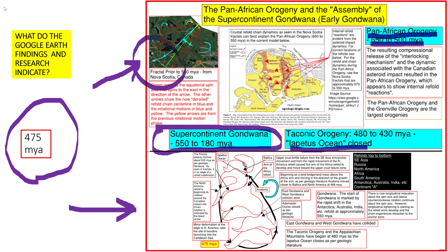Looking at the diagram, the refolds from top to bottom of the chain are: Southeast Asia at the top, Russia, North America, Africa, South America, Antarctica, Australia, India combined refold, and Continent A. As the supercontinent of Gondwana forms, starting 550 million years ago and existing to 180 million years ago, its start is marked by a rapid shift in the Antarctica-Australia-India combined refold at approximately 550 million years ago. There is now longitudinal relaxation about the spin axis, and lateral counterclockwise rotation continues, though longitudinal tightening is starting again as refold arms develop and the chain experiences attraction to the anchor zone.